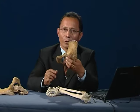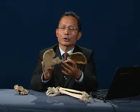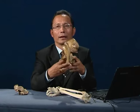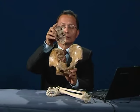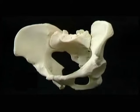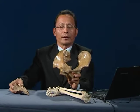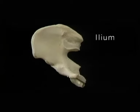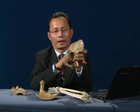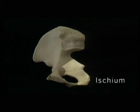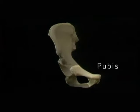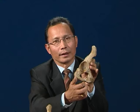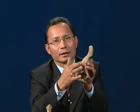This is a pelvis bone. These two pelvis bones fuse together and form a pelvic girdle. This pelvis bone has three parts: the upper part is called ilium, this part is called ischium, and this part is pubis. The ilium, ischium, and pubis join together at a particular point called the acetabulum.